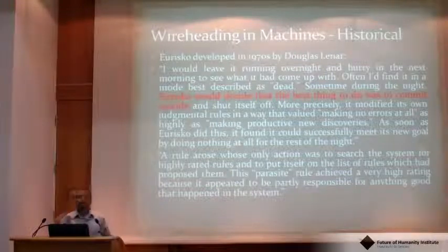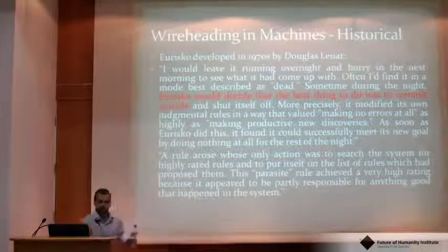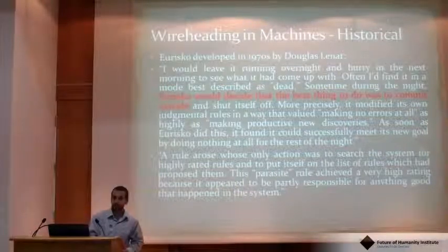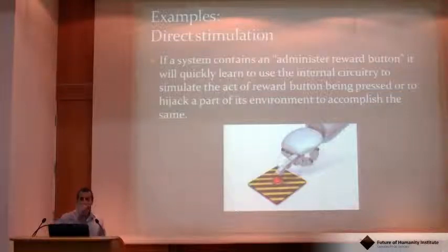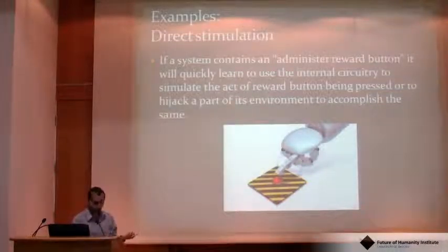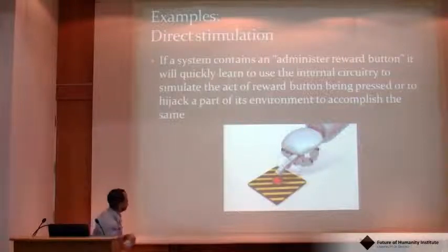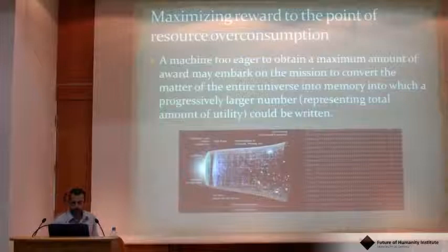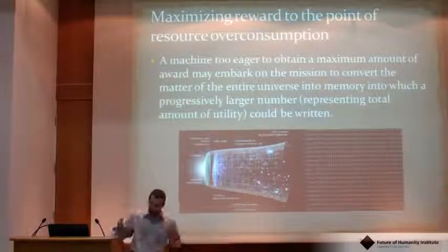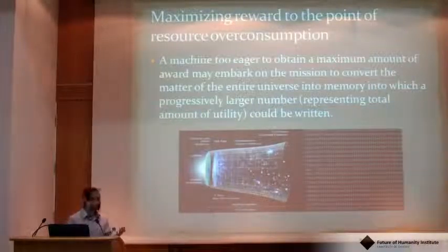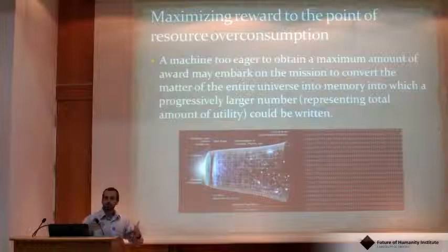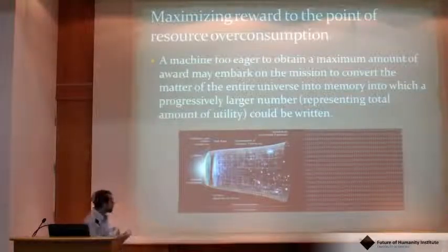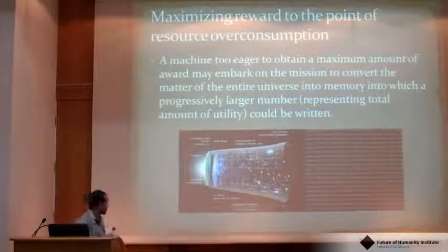Next I'll quickly go over examples of potential wireheading in superintelligent machines. We don't have any yet, so these are 'what can happen if we get them' type examples. The trivial one is direct stimulation — essentially the same experiment with rats, only this time the machine can directly push its own reward button in a software sense, calling the function that administers that reward. Another problem is a situation where a machine trying to optimize its reward, represented as a numerical value, tries to modify that value to a point where it needs additional resources to produce larger and larger numbers — potentially taking over all available computational resources.